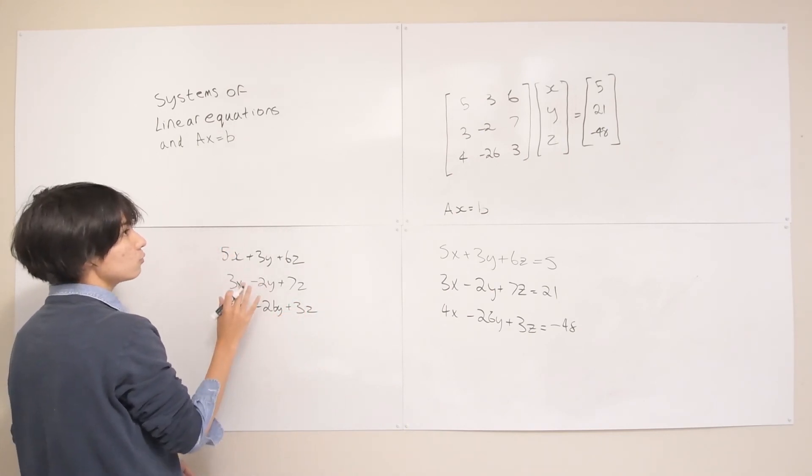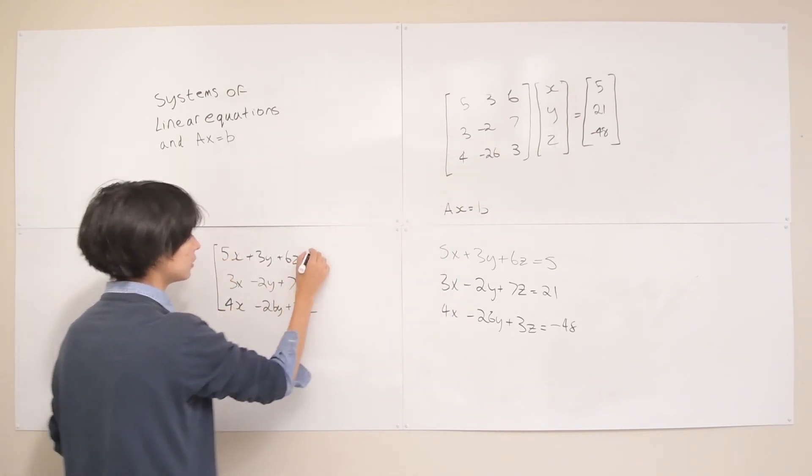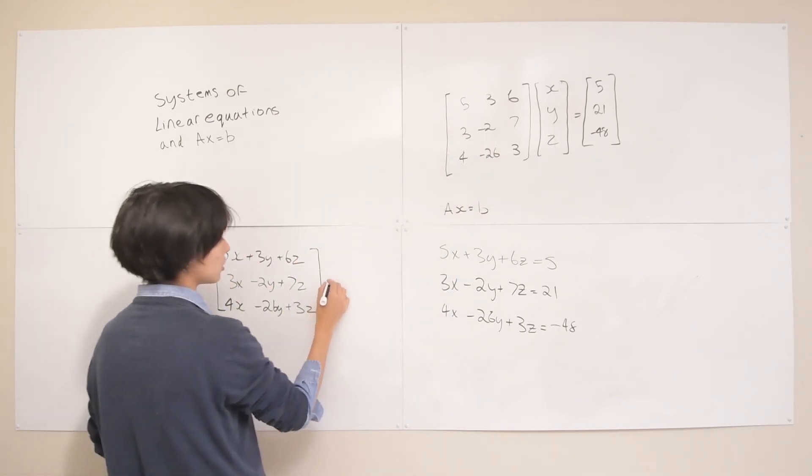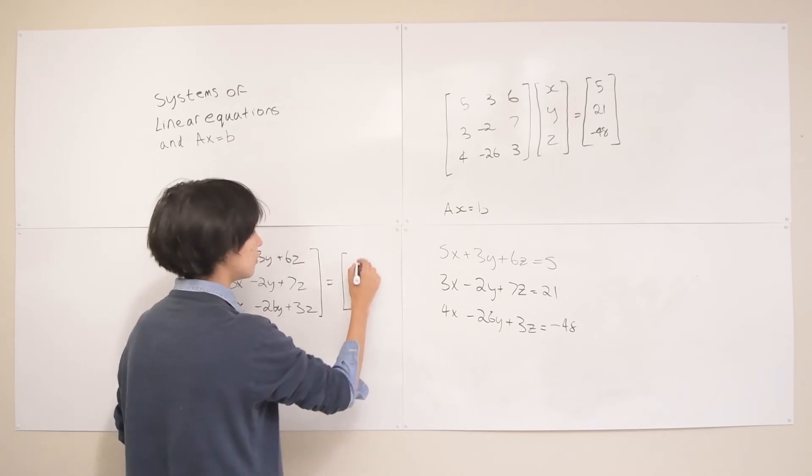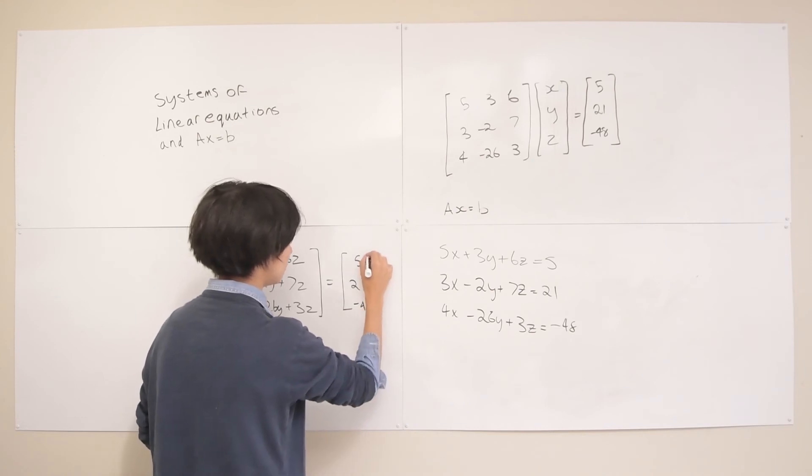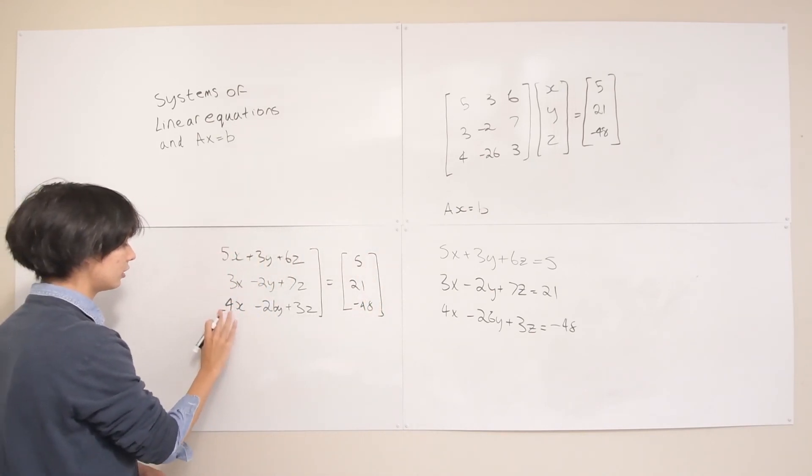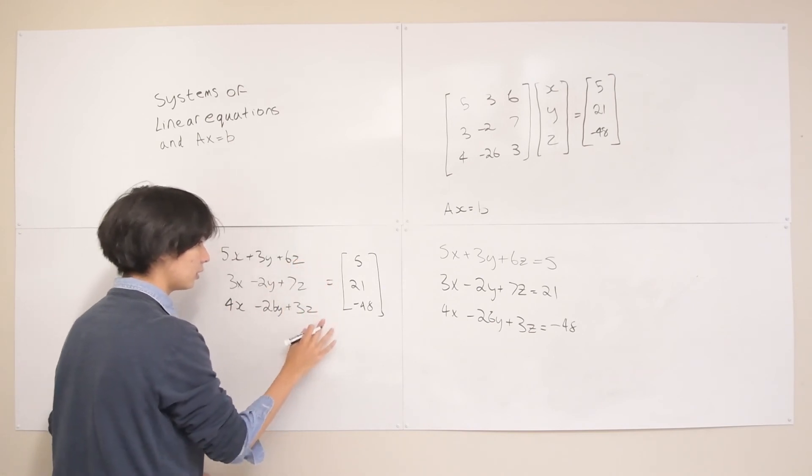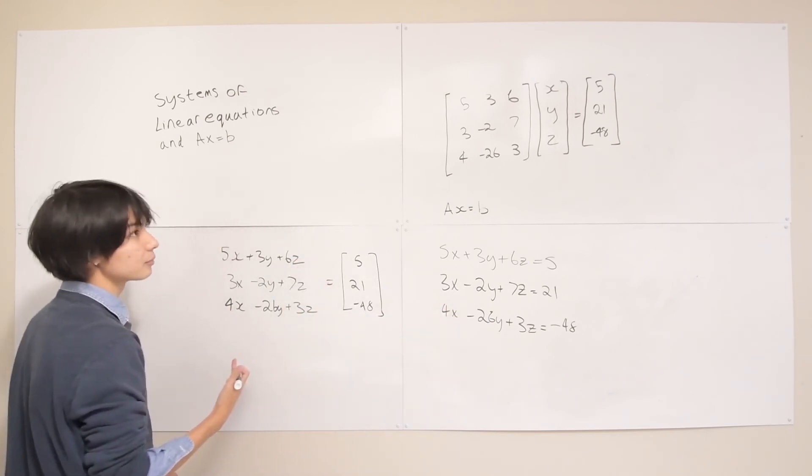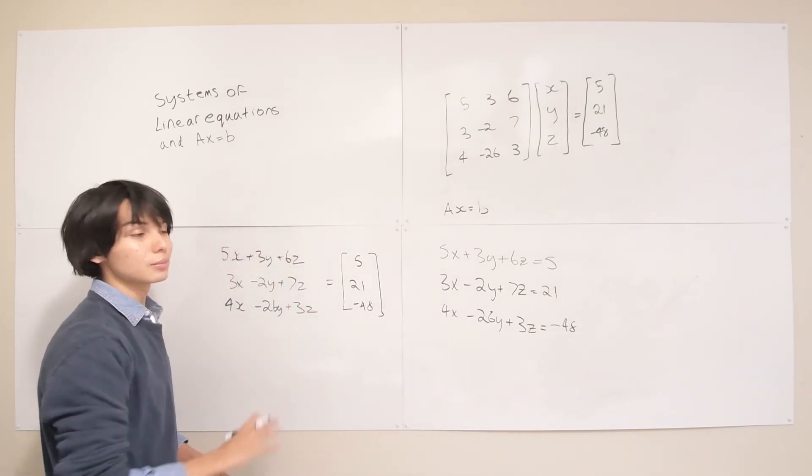So this is our dot products which is really just a vector here. And then now we're just gonna have this 5, 21, and negative 48. And you'll notice here, those two are identical. So really it's just a very compact way to show these systems of linear equations.